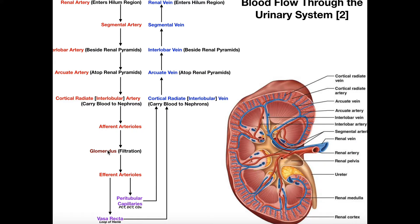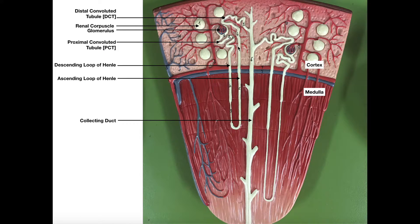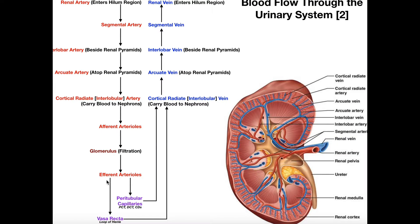That blood has to go somewhere, so it leaves the glomerulus via efferent arterioles. As we'll see in later videos, the entire nephron has all these tubules, and we'll be constantly reabsorbing things into the blood and secreting things from the blood. The loop of Henle is supplied by a network of blood vessels called the vasa recta. The other tubules — the proximal convoluted tubule, distal convoluted tubule, and portions of the collecting ducts — are supplied by peritubular capillaries. So the efferent arterioles eventually become these two capillary beds: the vasa recta, which supplies the loop of Henle, and the peritubular capillaries, which supply the PCT, DCT, and collecting ducts.